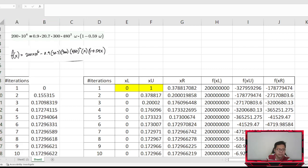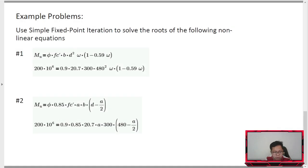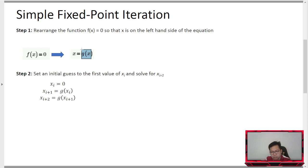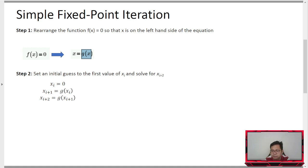I hope that was clear. So remember: when solving a non-linear equation using simple fixed point iteration, just change the function into x as a function of x. It is best to use simple fixed point iteration if you can easily manipulate the equation to isolate a variable. If it's difficult, we need to use another method. That's it for this video — maraming salamat sa panonood. If these videos are helpful, please like and subscribe to help the channel grow. See you in the next video!